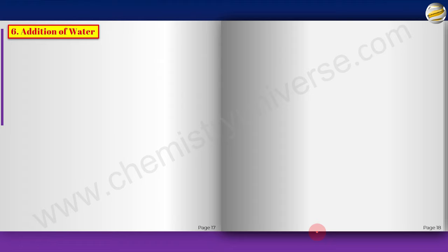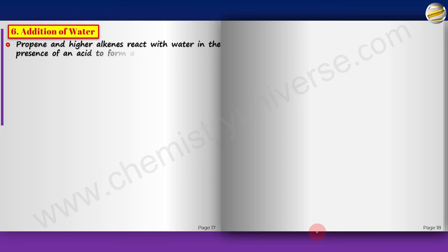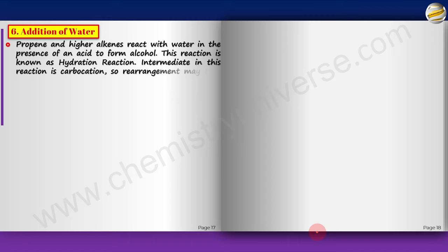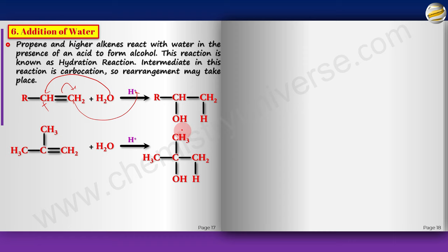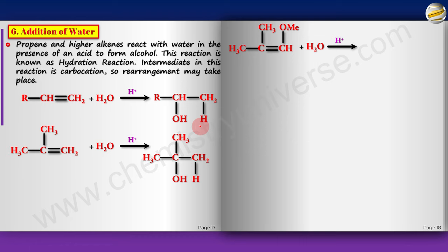Addition of water: Markovnikov addition again. Propene and higher alkenes react with water in the presence of an acid to form an alcohol — this is called the hydration reaction. The intermediate is a carbocation, so rearrangement may take place. The alkene reacts with H+ first, forming the more stable carbocation, then water attacks and releases H+ to give the Markovnikov alcohol. The carbocation on the more substituted carbon is more stable, so that carbon gets the OH.